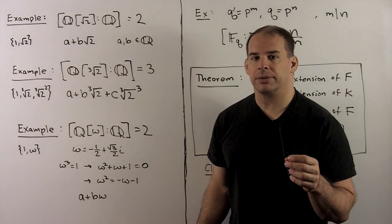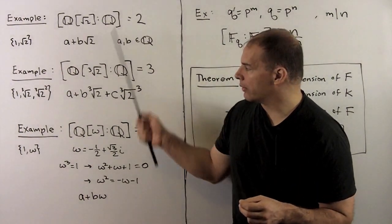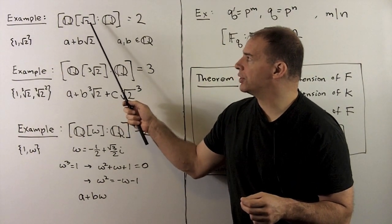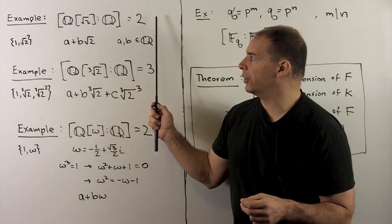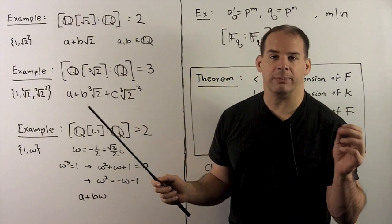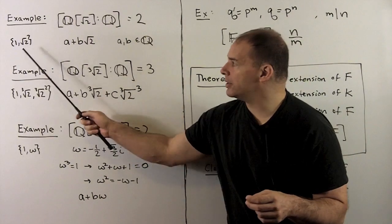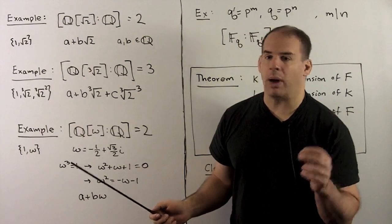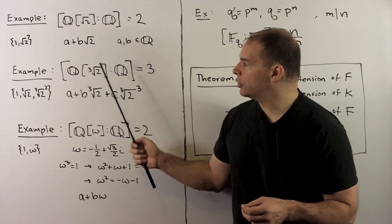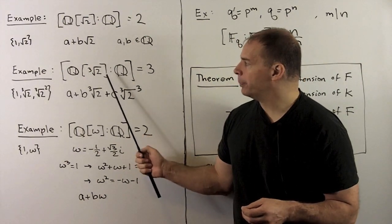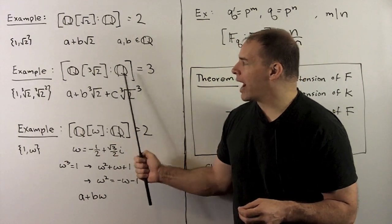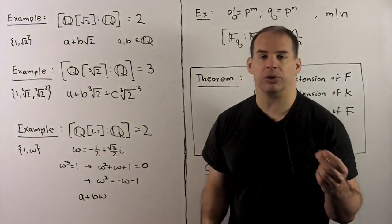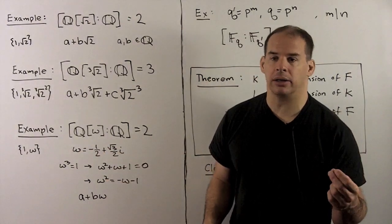For examples, all over the rationals: for Q adjoin √2, the degree over the rationals is 2, with basis {1, √2}. Likewise, for Q adjoin ∛2, the degree over the rationals is 3, with basis {1, ∛2, ∛2²}.